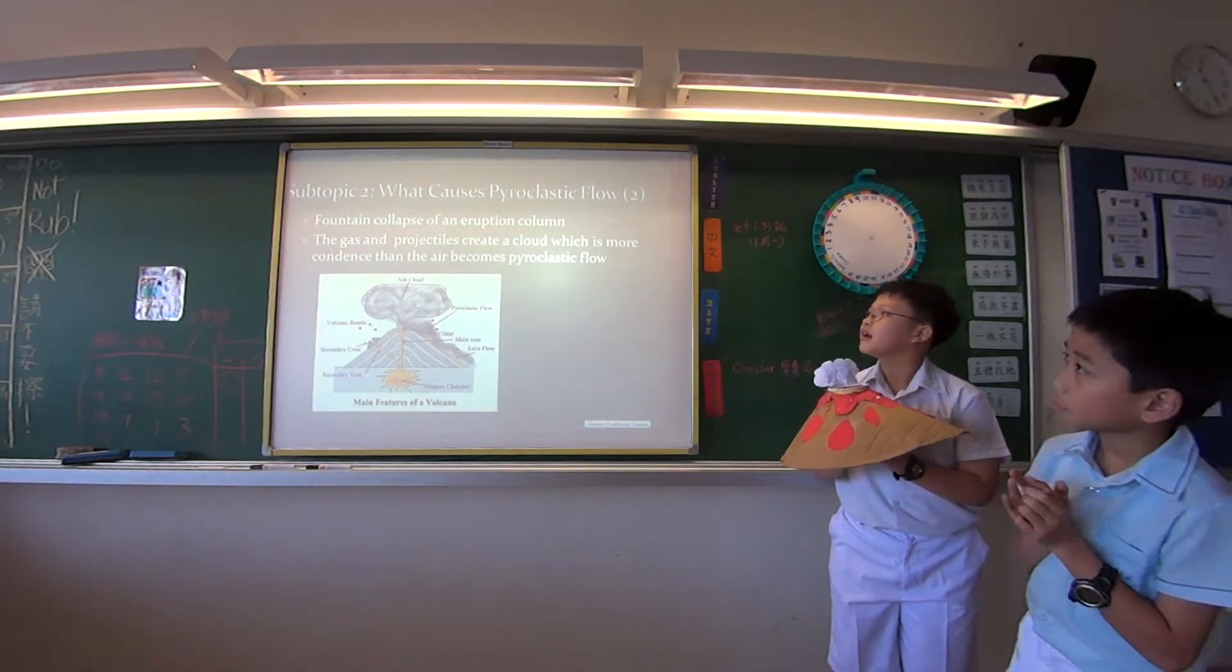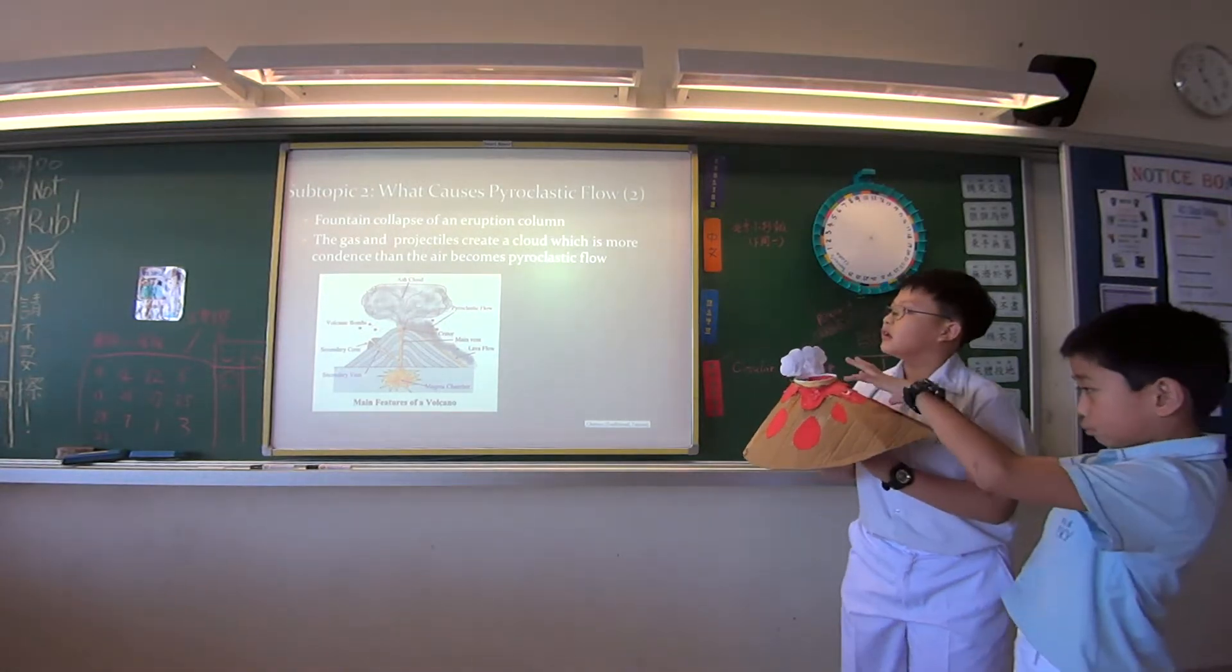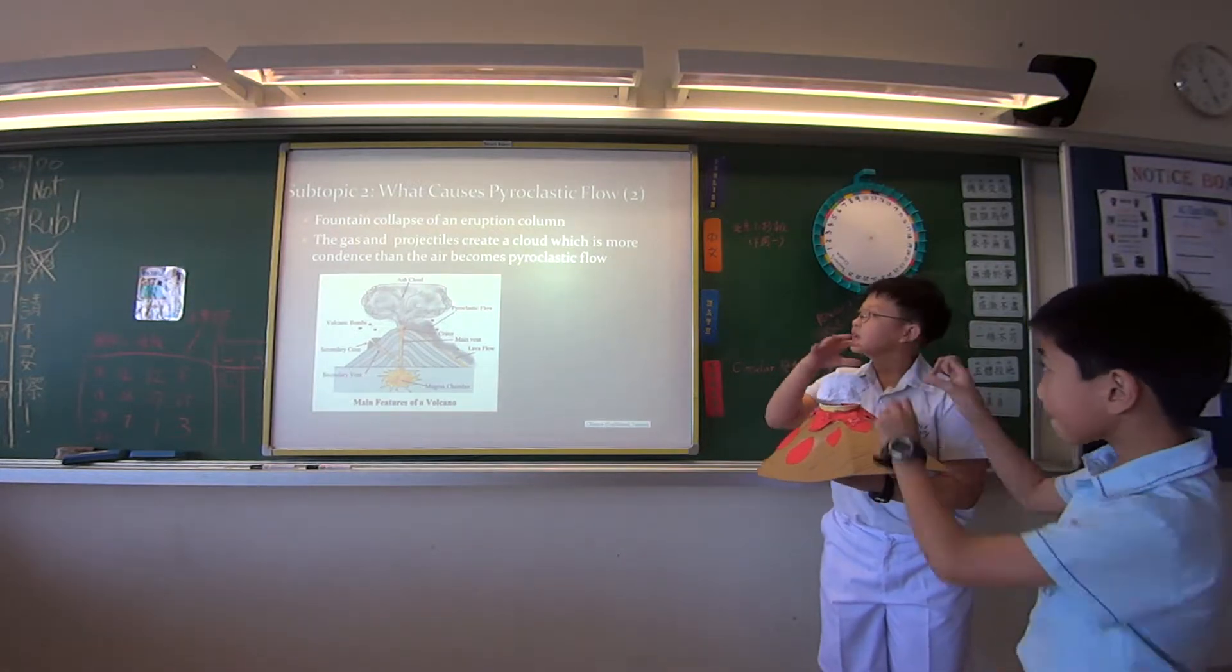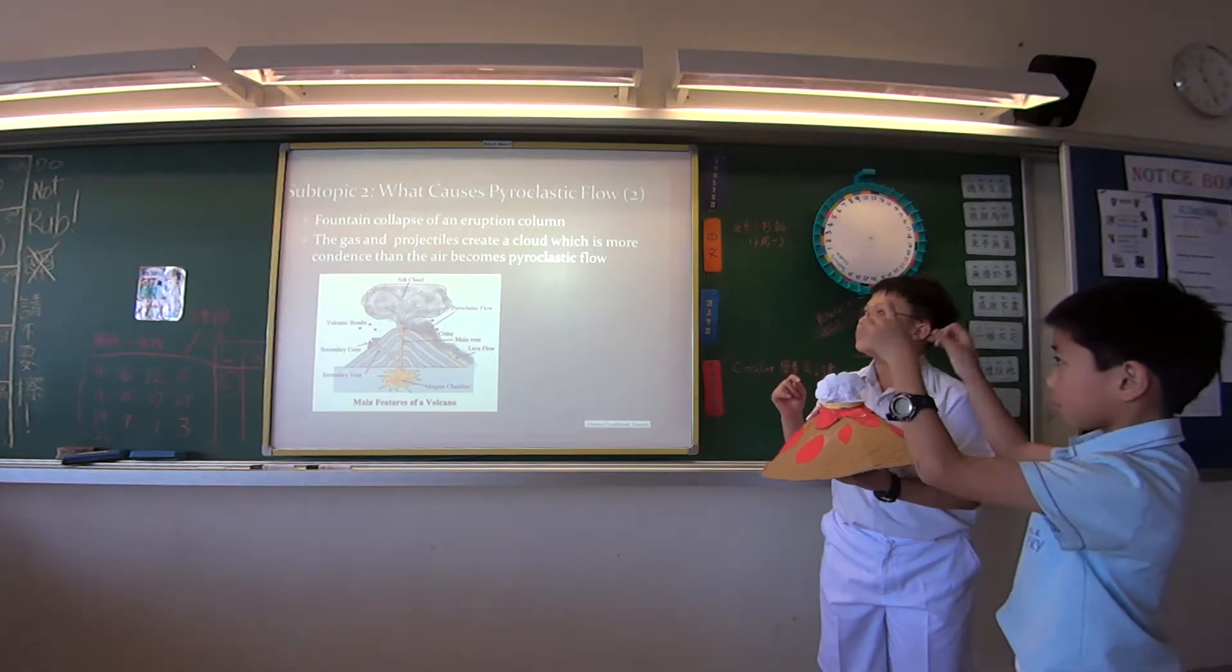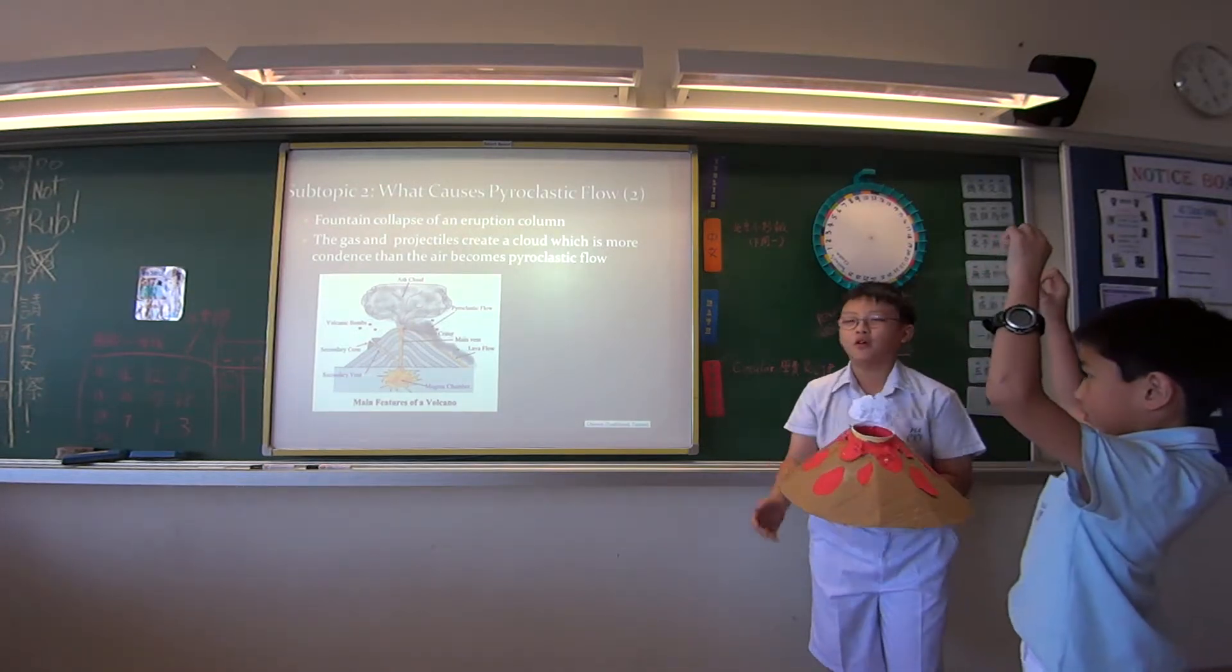It is a fountain collapse of an eruption column too. The gas and the projectiles create a cloud which is more dense, that means crowded, than the air. Then it will become pyroclastic flow too.